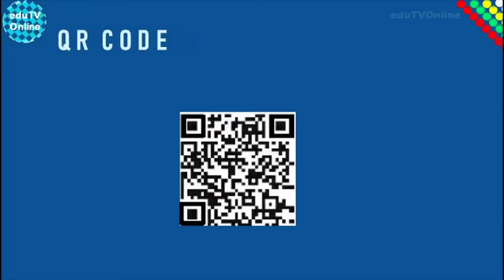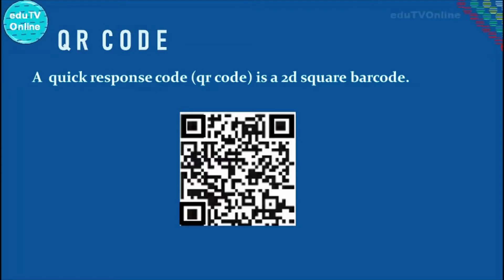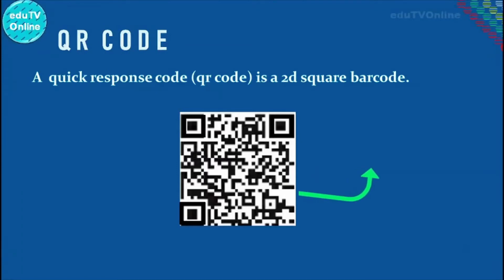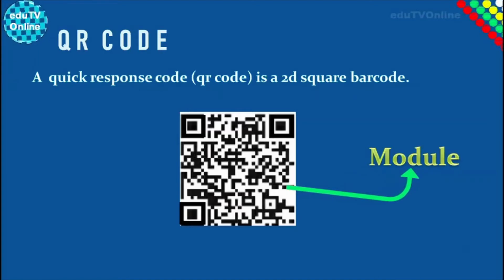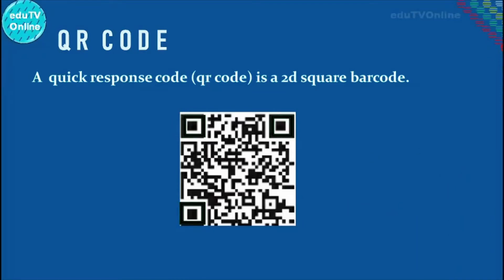Welcome to another video. In this video we are going to talk about QR codes. A quick response or QR code is a 2D square barcode. It is made of a matrix of black squares on a white background. Each black or white square is called a module. QR codes have three larger squares in three of their corners.